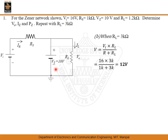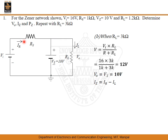With the Zener in the ON state, the output voltage equals VZ which is 10 volts. We now also have to find the Zener current and the Zener power. Applying KCL at the node, the current coming in splits across the Zener diode and the load. We find the total current, the load current, and thereby determine the Zener current.